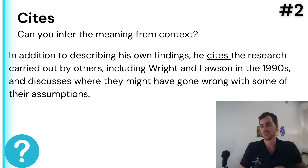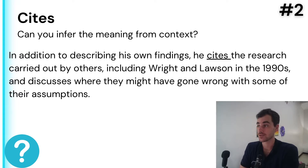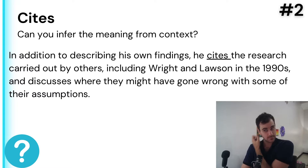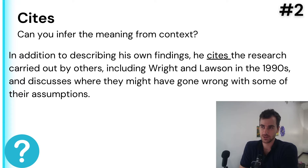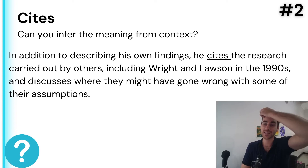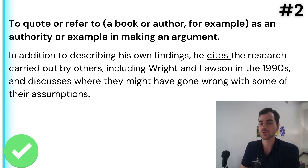Number two: 'cites.' On first glance it kind of looks like 'cities,' but it's 'cites.' 'In addition to describing his own findings, he cites the research carried out by others, including Wright and Lawson in the 1990s, and discusses where they might have gone wrong with some of their assumptions.' We're talking about research. When you're in school and you need to write an essay, how do you give credit to other people's research? You cite the research. So 'cite' is a verb meaning to quote or to refer to.